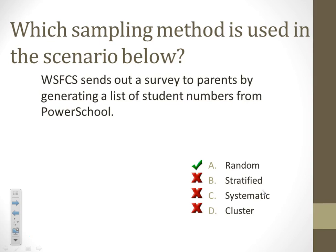Winston-Salem School sends out a survey to parents by generating a list of student numbers from all schools. That would be random, because every student had an equal chance of being chosen. It wasn't stratified — they didn't ensure specific numbers from each school or grade level. It wasn't systematic or clustered. It was completely random.